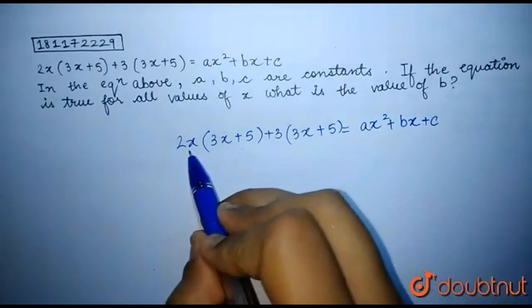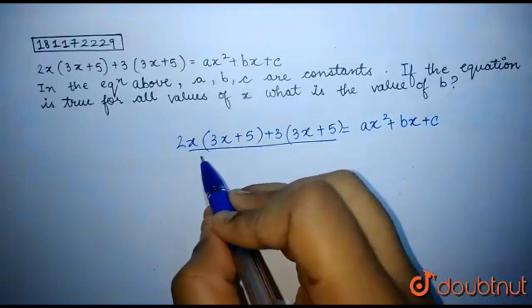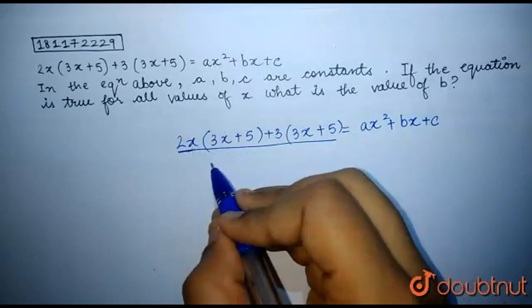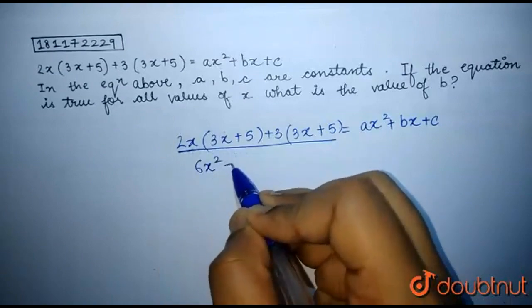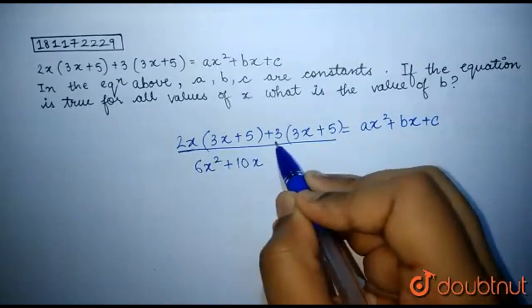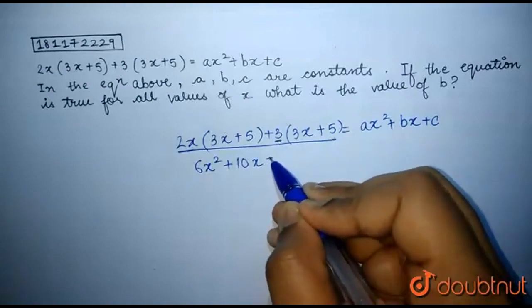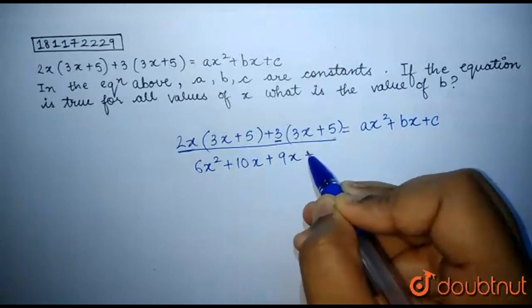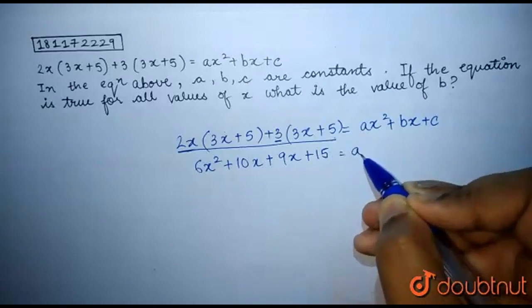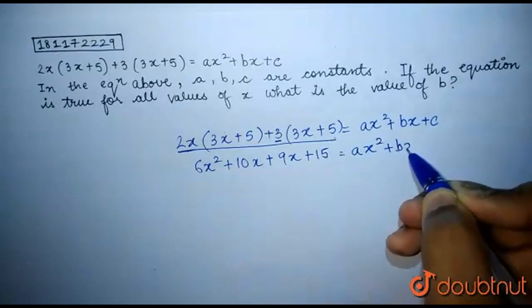So now we will try to simplify the left hand side of the equation. When we multiply 2x inside this bracket, we get 6x square plus 10x, and multiplying 3 inside the second bracket, we get 9x plus 15 is equal to ax square plus bx plus c.